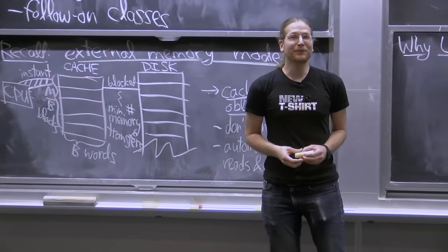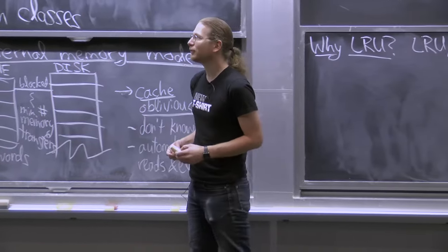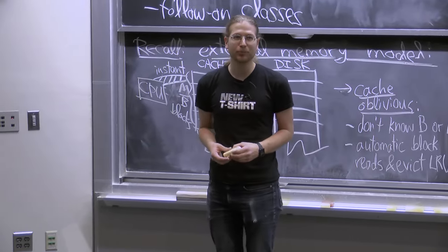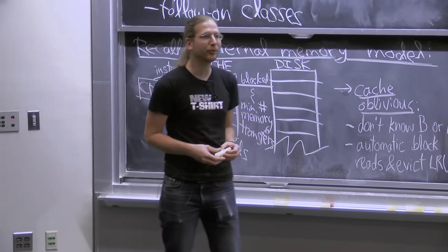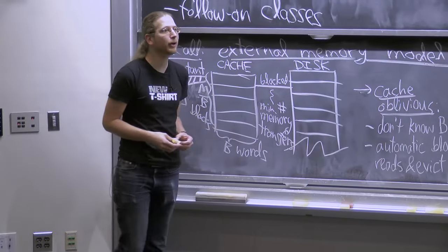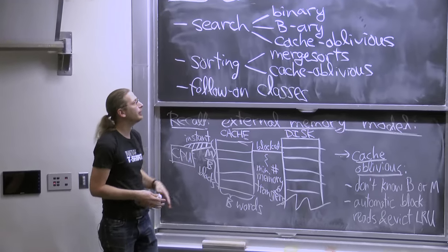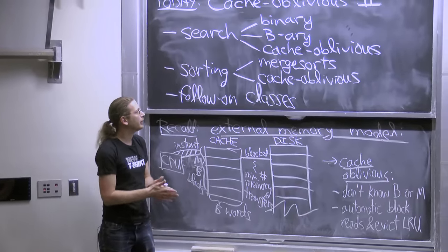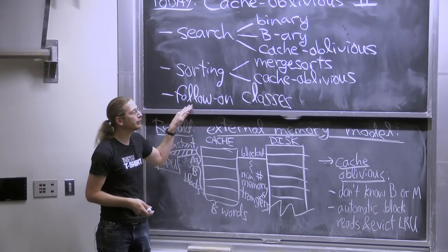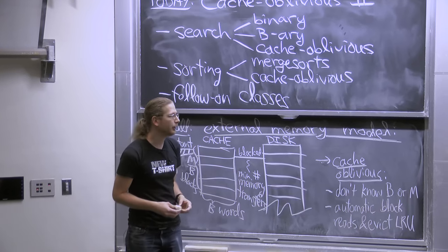Welcome to the final lecture of 6.046. Today we continue our theme of cache oblivious algorithms. We're going to look at two of the most basic problems in computer science — searching and sorting, a little bit of each. And then I'll tell you a little bit about what class you might take after this one.